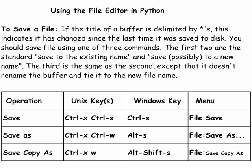To save a file in Python you can use the command control X, control S. You should save a file with this, or use the command to change the file name with a save as command: control X, control W. These are the standard ways of saving a file.